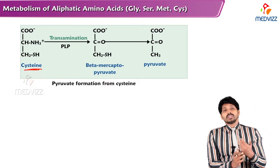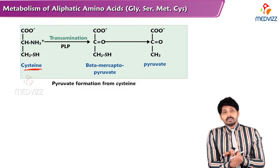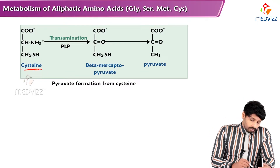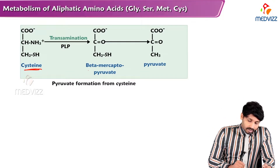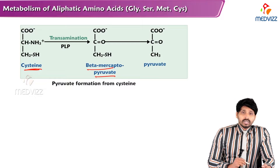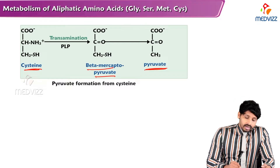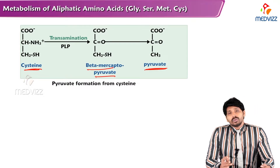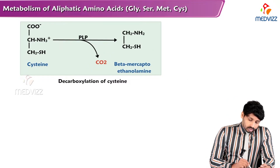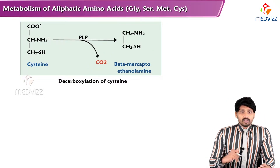Now, what is the metabolic fate — that is, the catabolism — of cysteine? By transamination it can be converted to beta-mercaptopyruvate, which is a PLP-dependent reaction, and it can then be converted to pyruvate and enter into the gluconeogenesis pathway. That is why cysteine is glucogenic in nature.